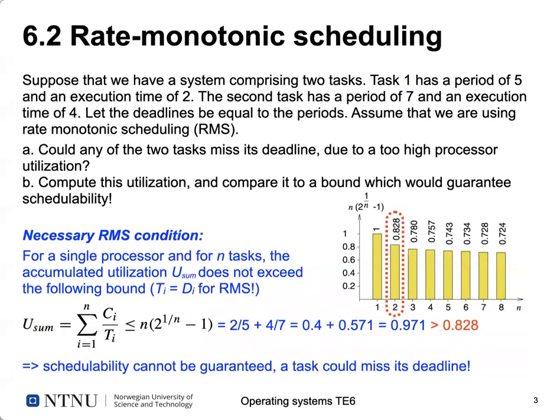We also looked at a different scheduling algorithm: Rate Monotonic Scheduling. Here we have a system with two periodic tasks. Task one must execute once every five time units and needs two computing time units. Task two must execute once every seven time units and needs four time units. Deadlines are equal to periods, so task one must finish every five time units and task two every seven.